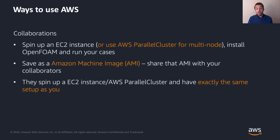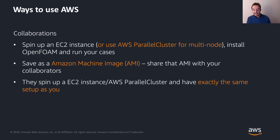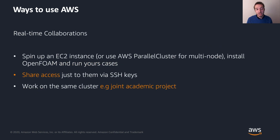What about collaborations? You could spin up an EC2 instance or Parallel Cluster for multi-node, install OpenFOAM, and run your cases. You could then save it as an Amazon Machine Image and share it with your collaborators via their account ID, or even make a community image so anyone can use your installation. They can have exactly the same setup, operating system, and environment as you — which reduces uncertainties between runs and lets you replicate or repeat other people's work. You can also do real-time collaborations by sharing access via SSH keys for joint academic projects.